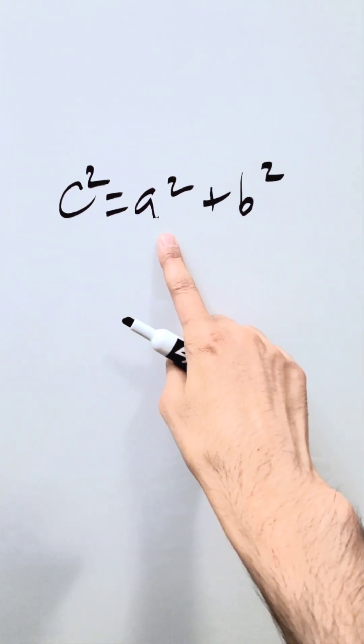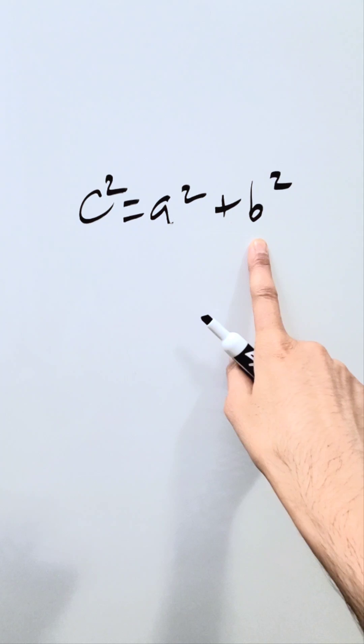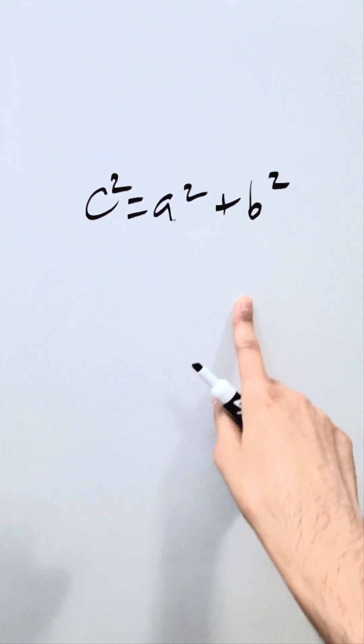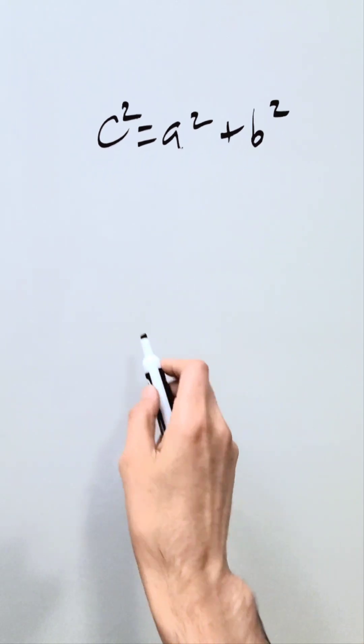Look here, c squared equals a squared plus b squared. You know this famous theorem, this famous formula from middle school. Let's show how we can easily prove it in a graphic, visually appealing manner. There are many ways, I'm showing you a simplified way.